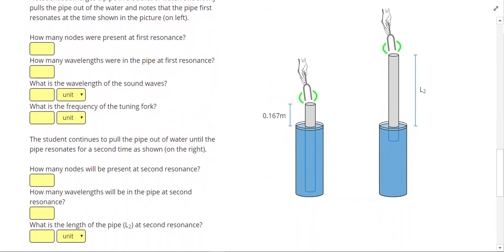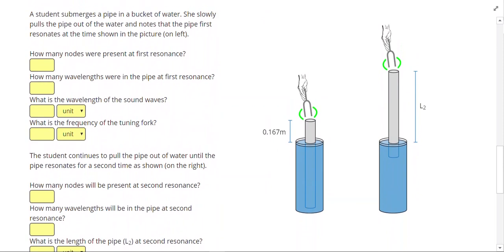Let's do one more problem here. This problem says a student submerges a pipe in a bucket of water. She slowly pulls the pipe out of the water and notices the pipe first resonates at the time shown in the picture on the left. So we know in this column of air right here that we must have a standing wave. Let's go ahead and draw that standing wave. At the water, the air cannot vibrate. But at the open end of the tube, we should have an anti-node. So drawing my little wave in there, it's just a node on one end, an anti-node at the other. That's just one node total, and that is 0.25 waves.